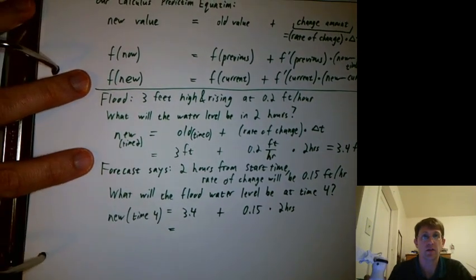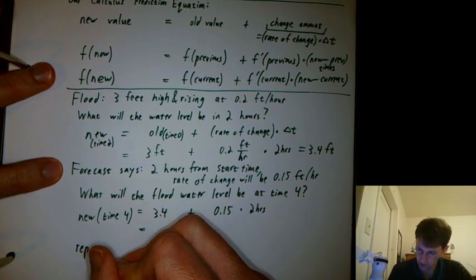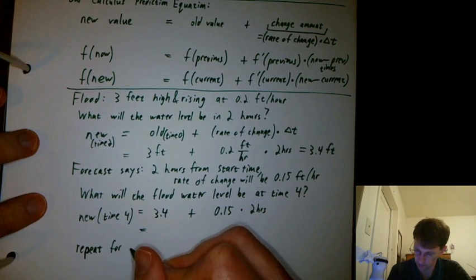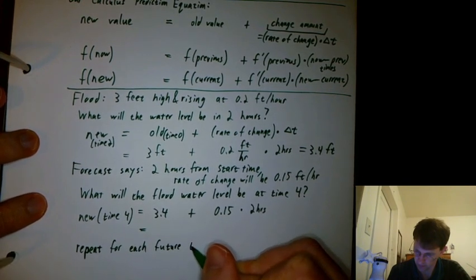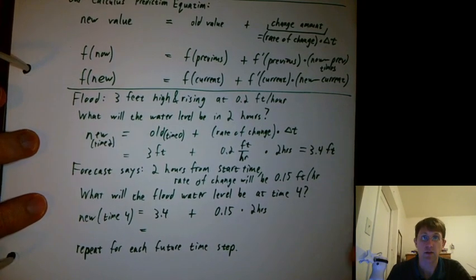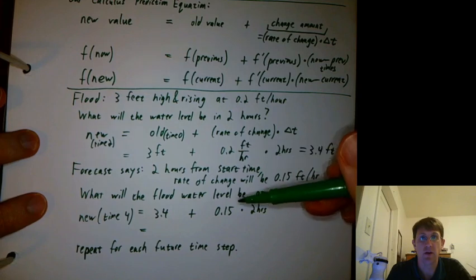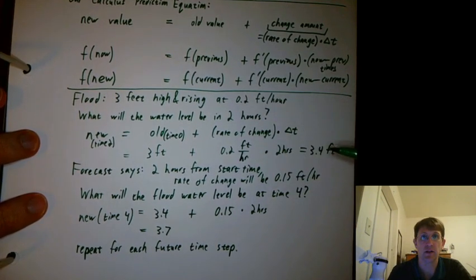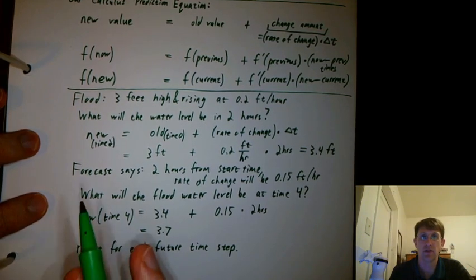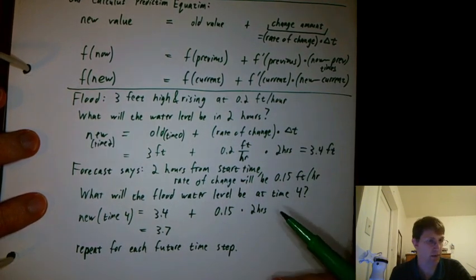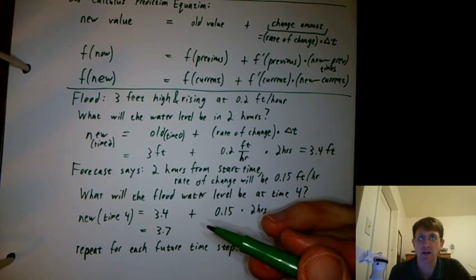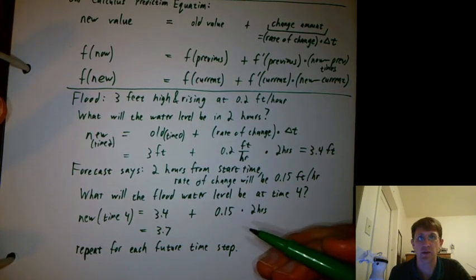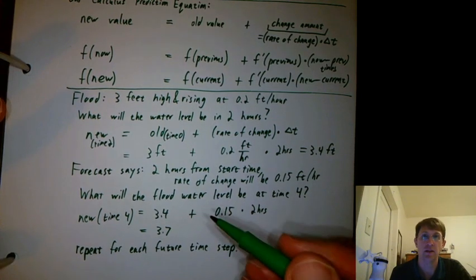And then you could say, okay, and then how about another two hours from then, or one hour from then? So, you could repeat as long as you have information about what the forecast is saying. So, here we're given rates of change, 0.2 feet per hour, 0.15 feet per hour, and we're using those to get values of what we think the flood will be at, starting at 3, then 3.4, then 3.7. So, we're getting values of F based on values of F prime and delta T. So, here, we haven't said how the forecast is working. There's probably all kinds of interesting geology going on there. But our next example, we'll talk about how the rate of change can depend on the amount of stuff itself.